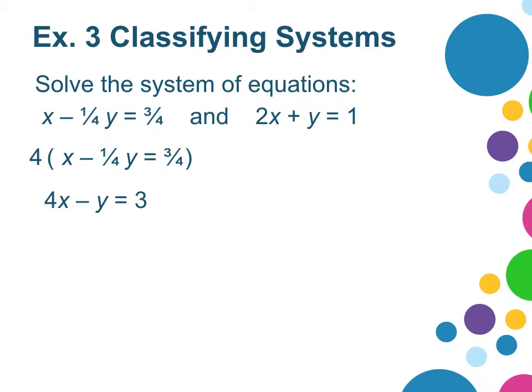And underneath that, I can write the other equation and now use elimination by adding both equations. And I get 6x equals 4, x equals 2 thirds.